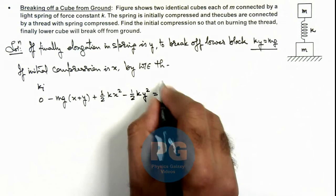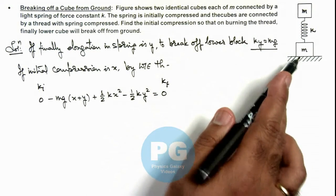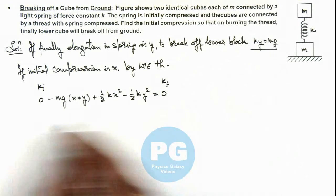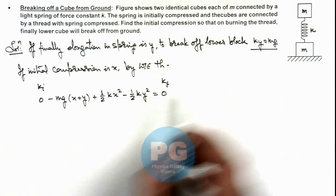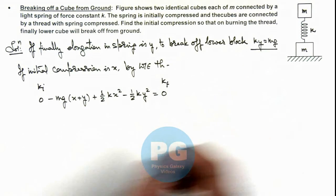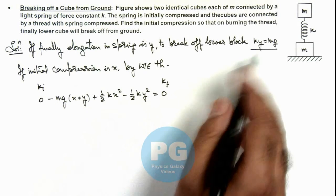Finally, the upper block will come to rest just before the lower block will bounce. In this situation, we can write the value of ky as mg.